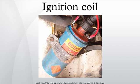Some coils have an internal resistor while others rely on a resistor wire or an external resistor to limit the current flowing into the coil from the car's 12 volt supply. The wire that goes from the ignition coil to the distributor and the high voltage wires that go from the distributor to each of the spark plugs are called spark plug wires or high tension leads.